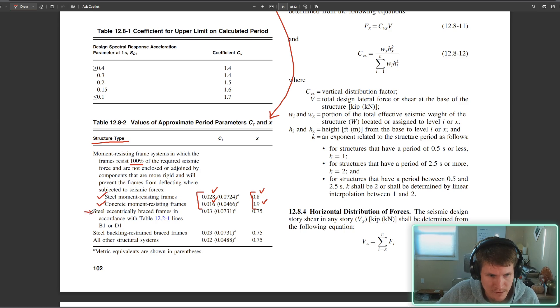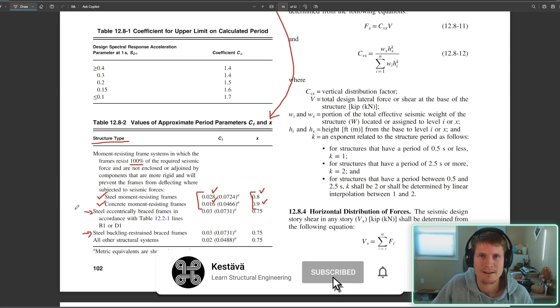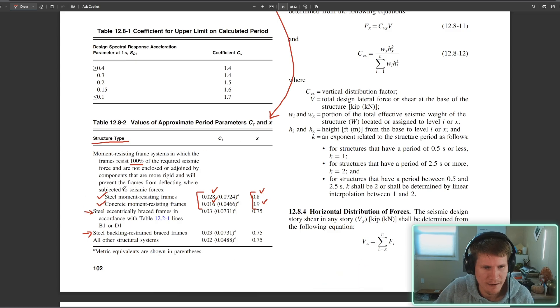The next option we have: steel eccentrically braced frames in accordance with table 12.2-1. Well, we don't have any eccentrically braced frames here today. Then we have steel buckle restrained brace frames - don't have any of those today as well. Those are great in seismic application, by the way. Steel eccentrically braced frames are really great in seismic application as well. They're kind of scary to design, at least in my opinion.